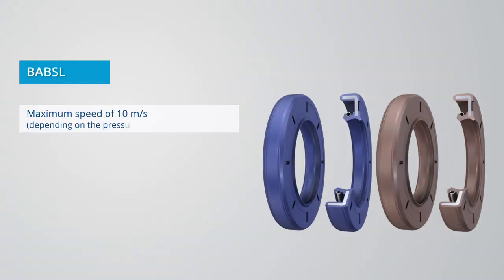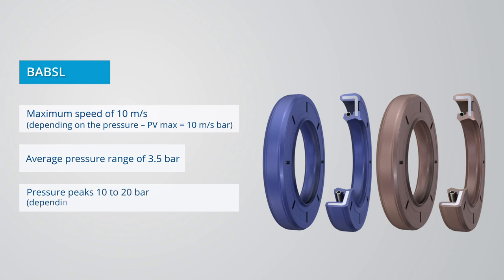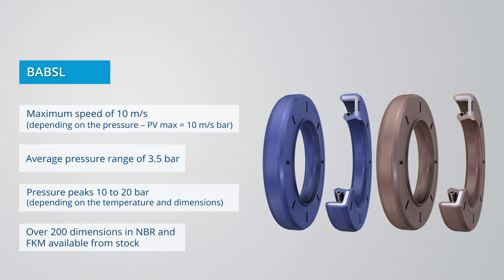Maximum speed of 10 meters per second, depending on the pressure. Average pressure range of 3.5 bar. Pressure peaks from 10 to 20 bar possible, depending on the temperature and dimensions. Over 200 dimensions in the materials NBR and FKM available from stock.